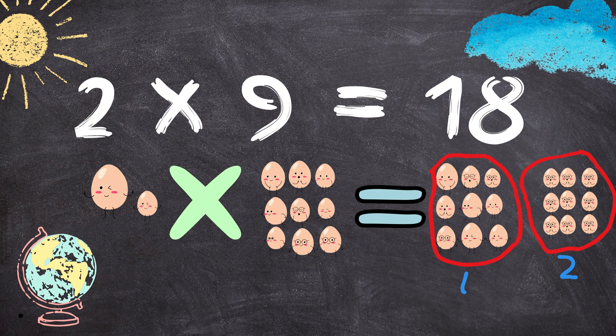Two times nine equals eighteen. Two eggs multiplied by nine eggs will give you one, two, three, four, five, six, seven, eight, nine, ten, eleven, twelve, thirteen, fourteen, fifteen, sixteen, seventeen, eighteen eggs.